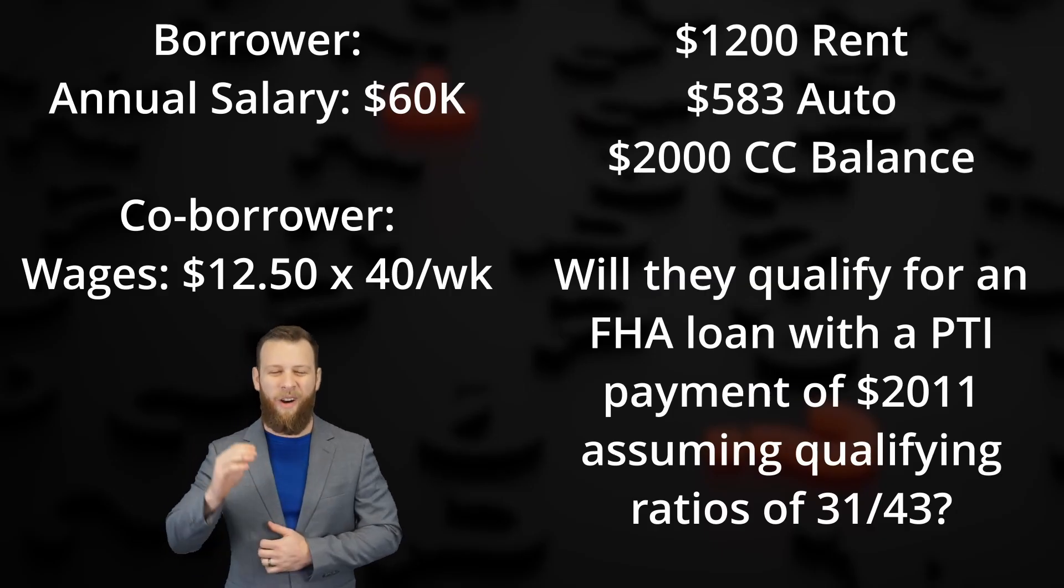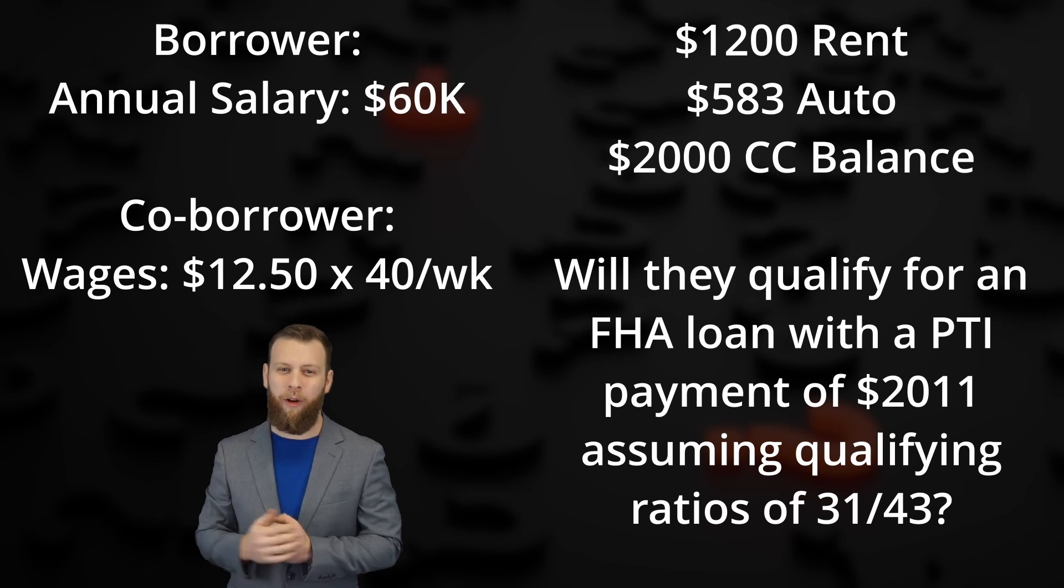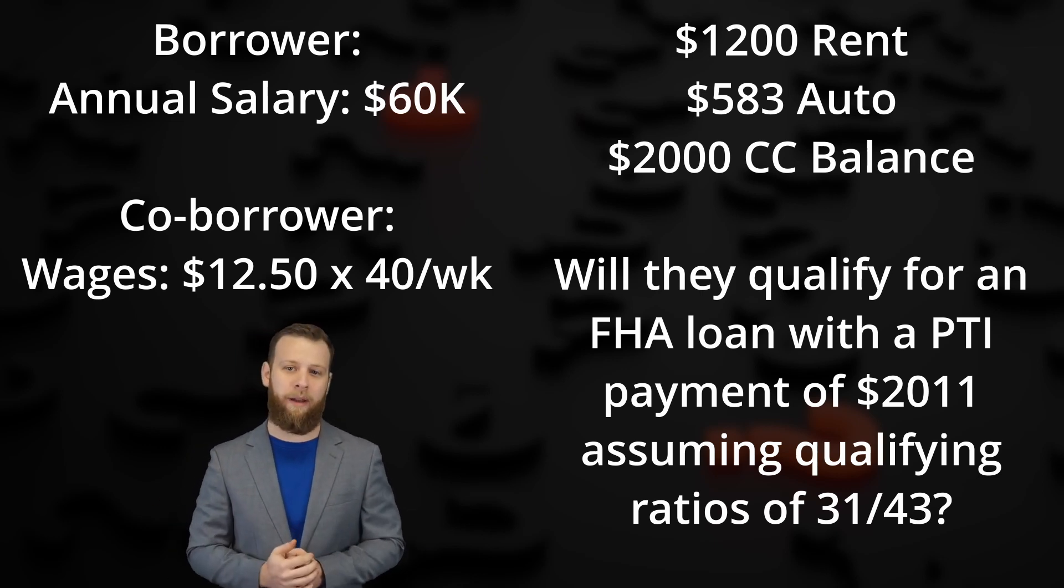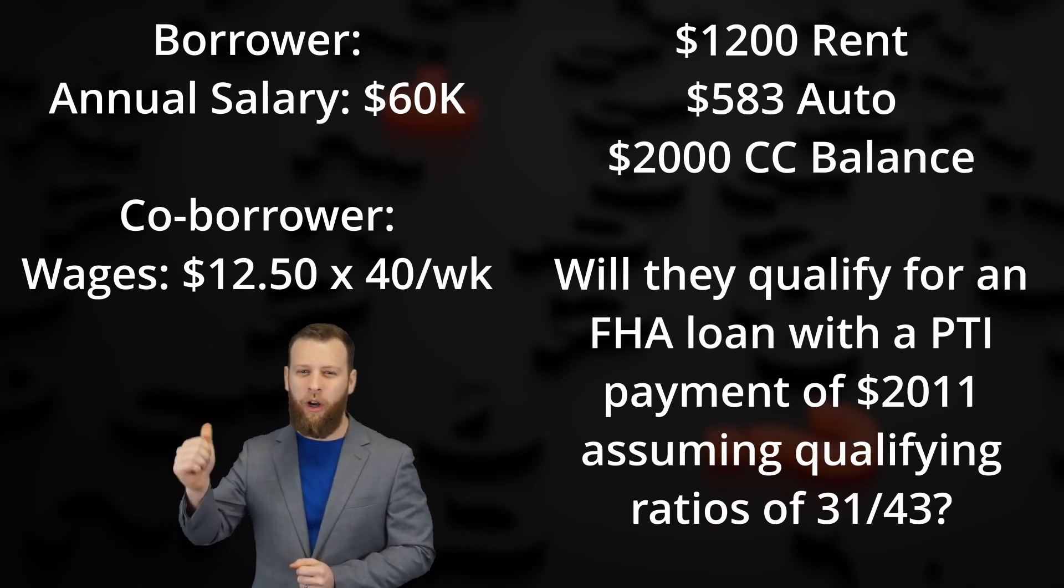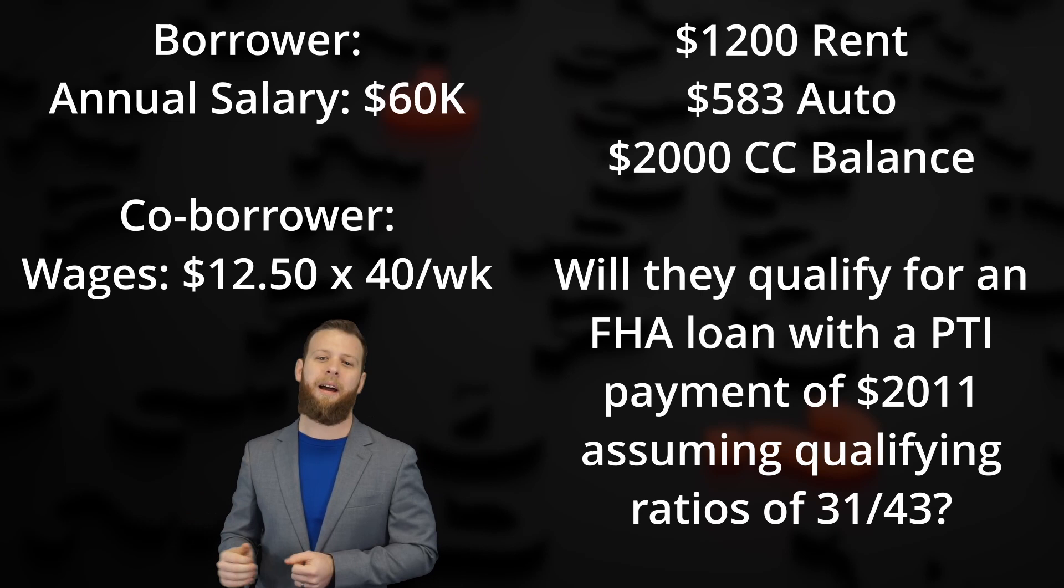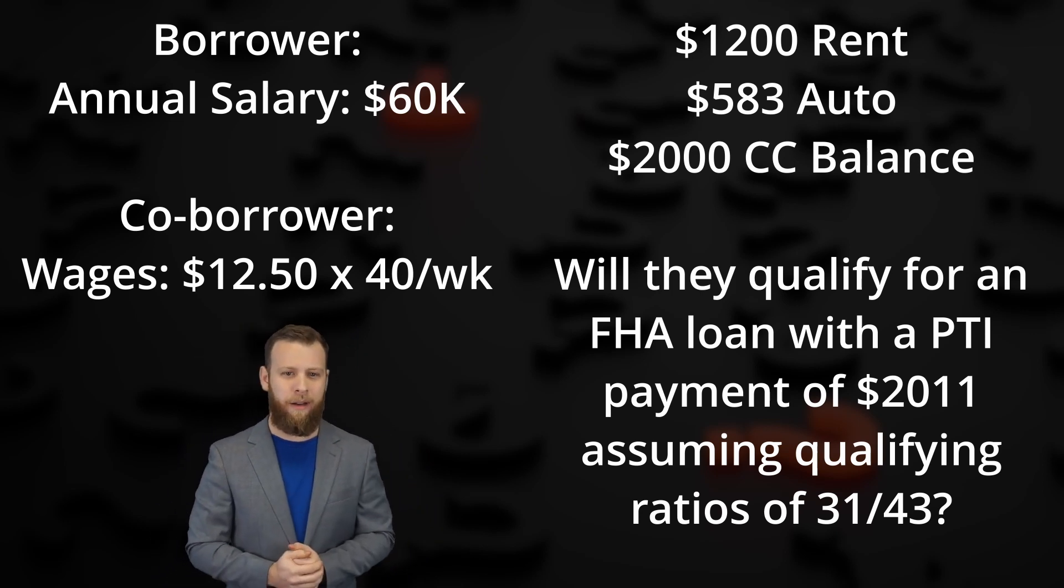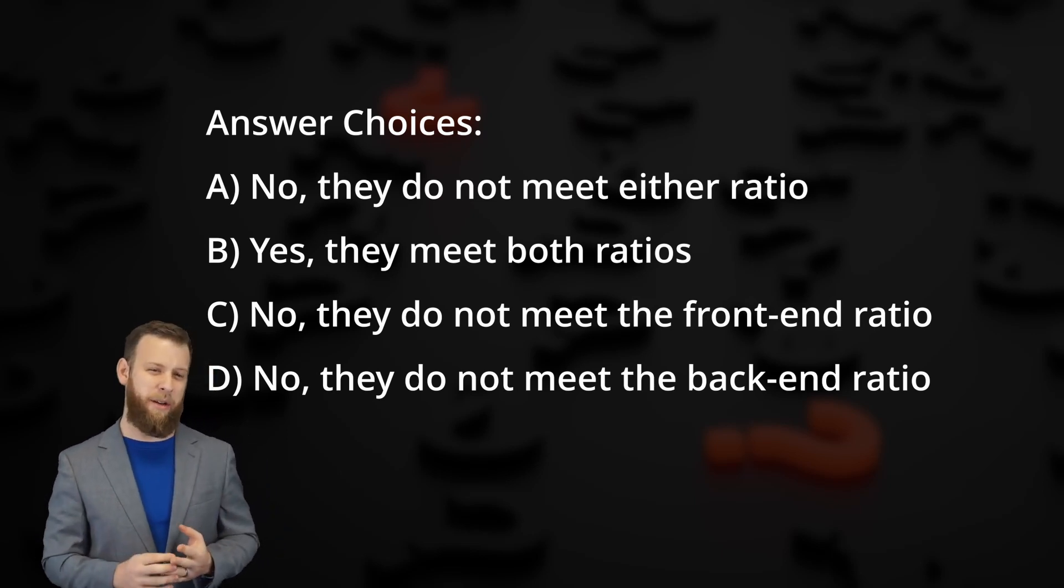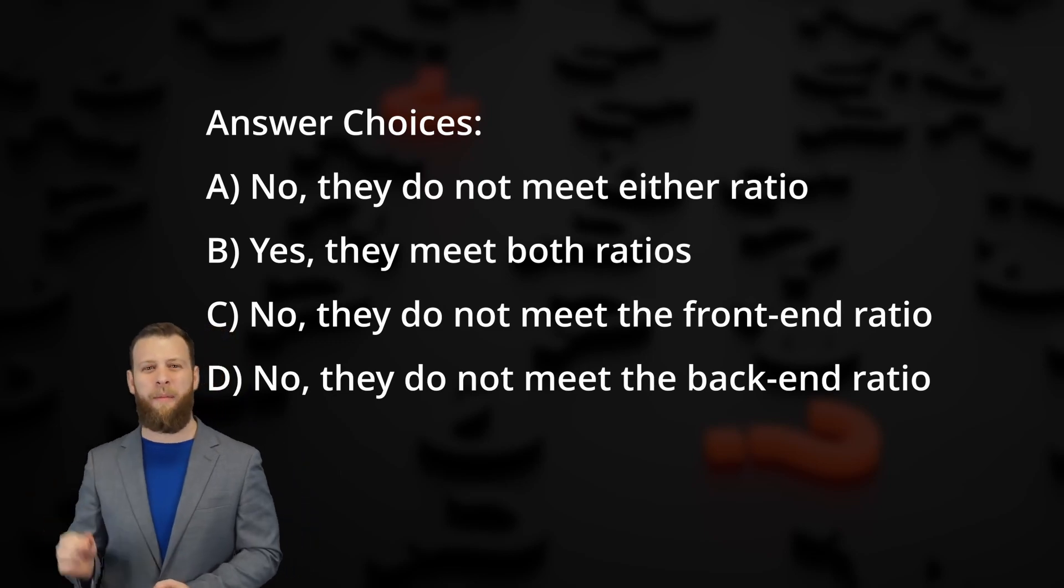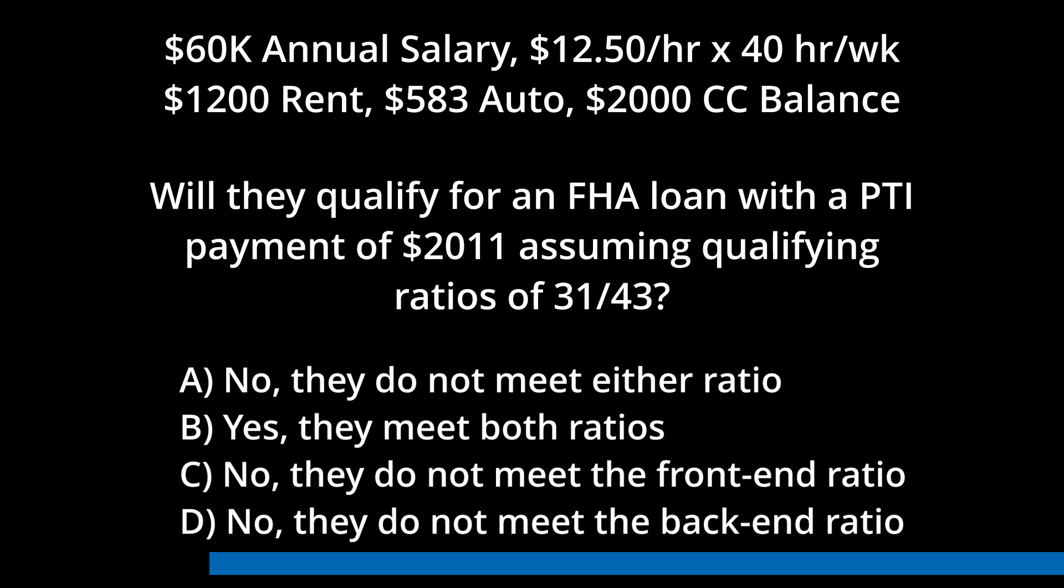So what we're going to do here is we're going to test your understanding on this topic with a couple of examples. Alright, so our first example question. A borrower and a co-borrower apply for a loan. The borrower has an annual salary of $60,000 and the co-borrower makes $12.50 an hour and works 40 hours per week. They currently pay $1,200 in rent and their debts include a car payment of $583, a credit card balance of $2,000. Will they qualify for an FHA loan with a PITI payment of $2,011 assuming qualifying ratios of 31/43? Our options are A. No, they don't meet either ratio. B. Yes, they meet both ratios. C. No, they don't meet the front end ratio. Or D. No, they don't meet the back end ratio. Now, for the sake of keeping this video a little shorter, I would suggest pausing this video now and working on this at your own pace. Once you have your answer, you can resume the video and we'll go from there.